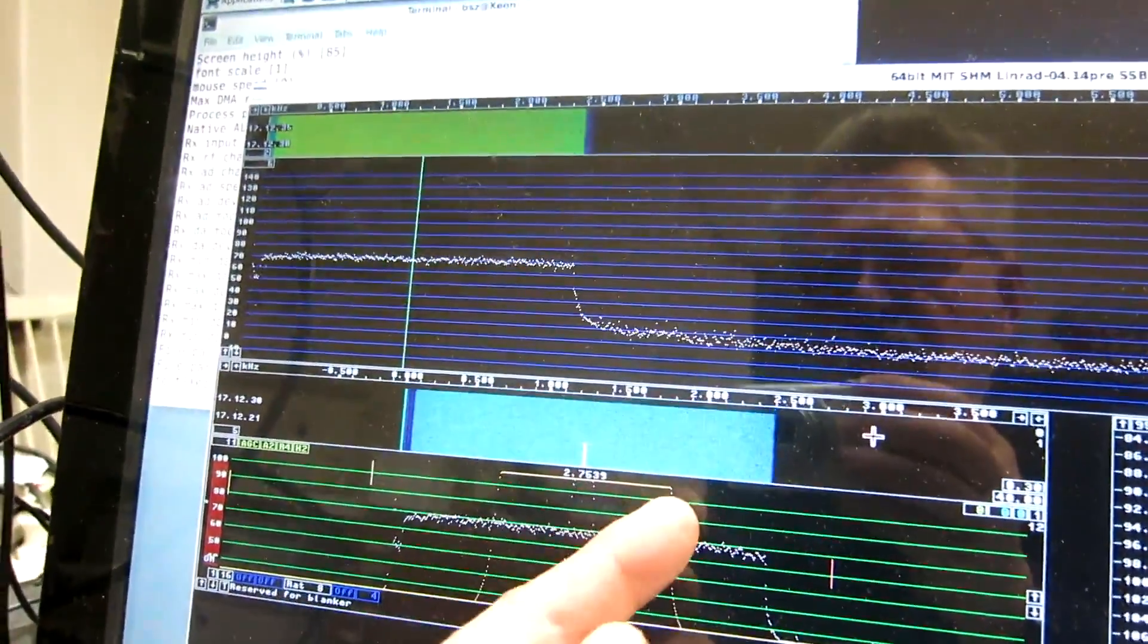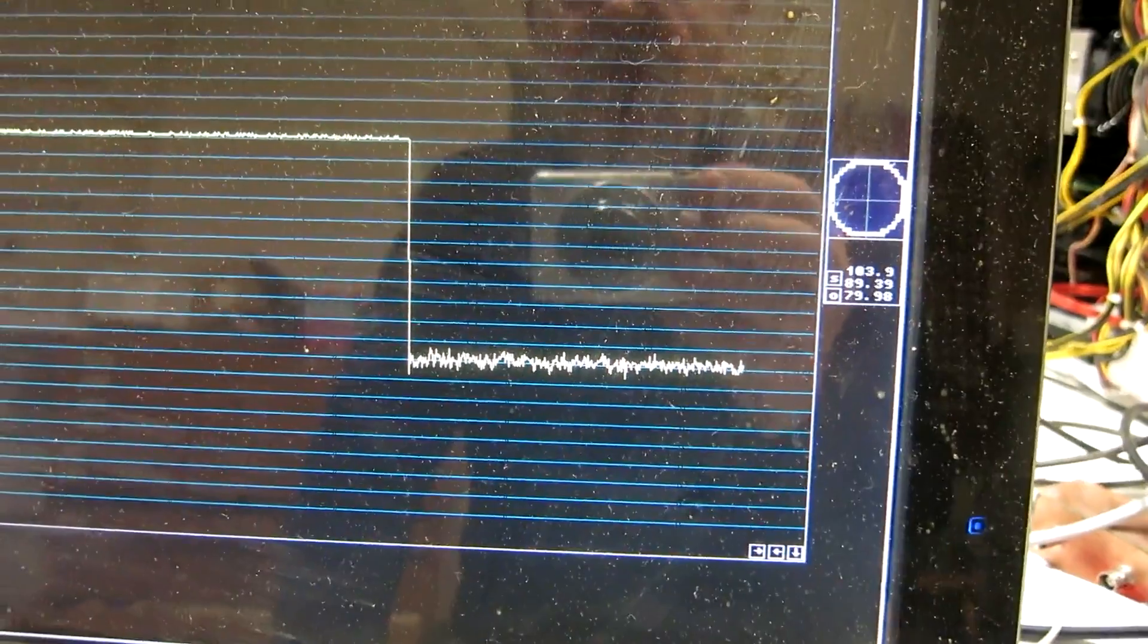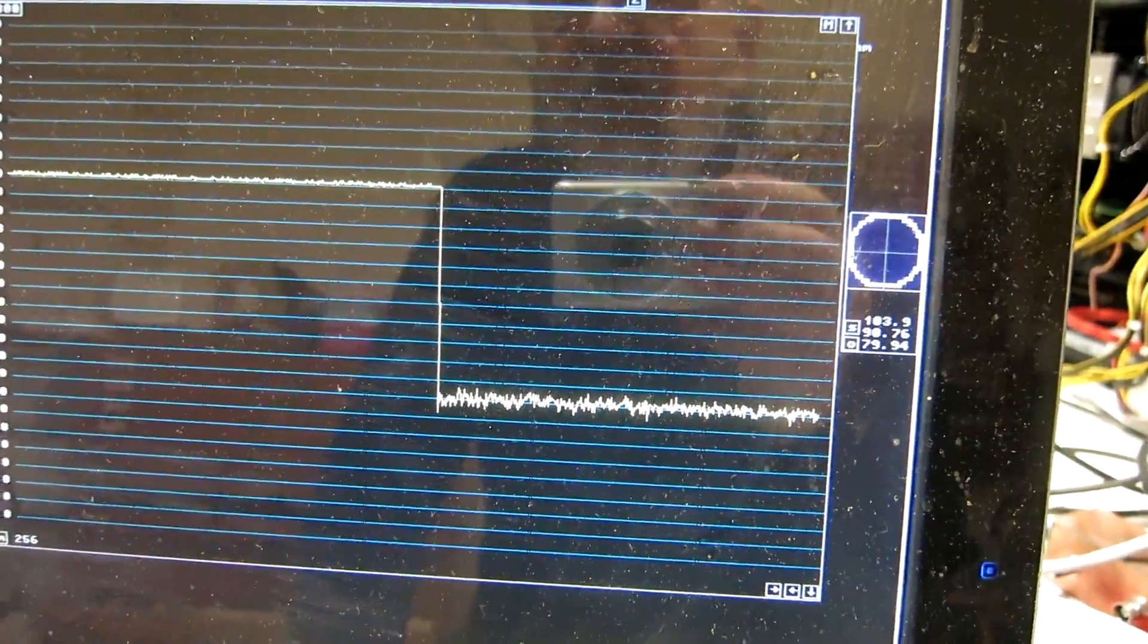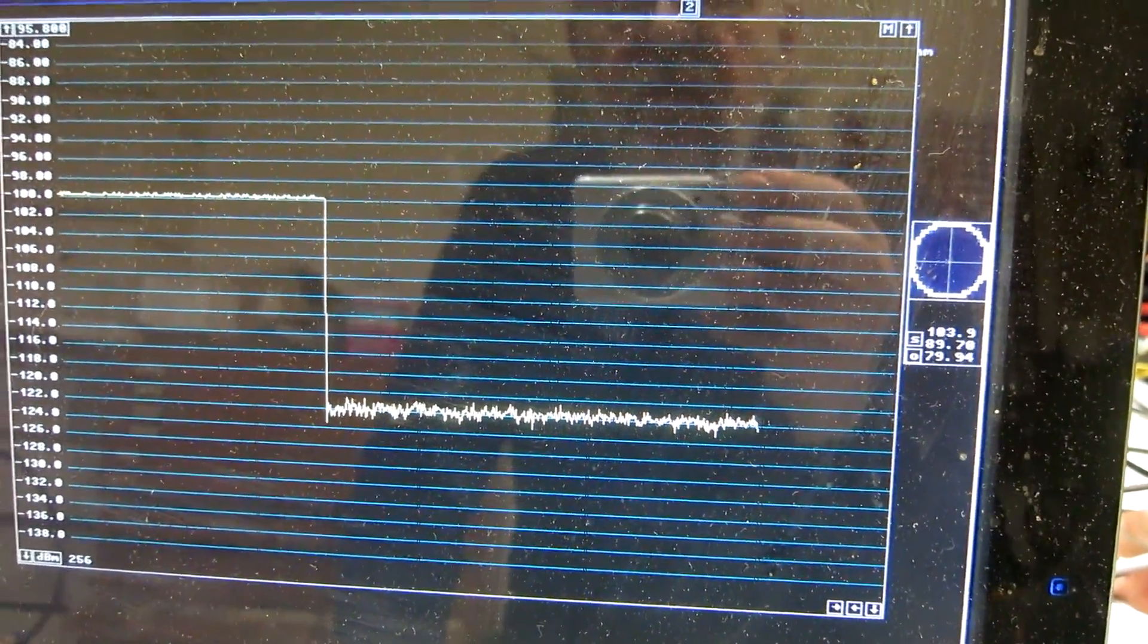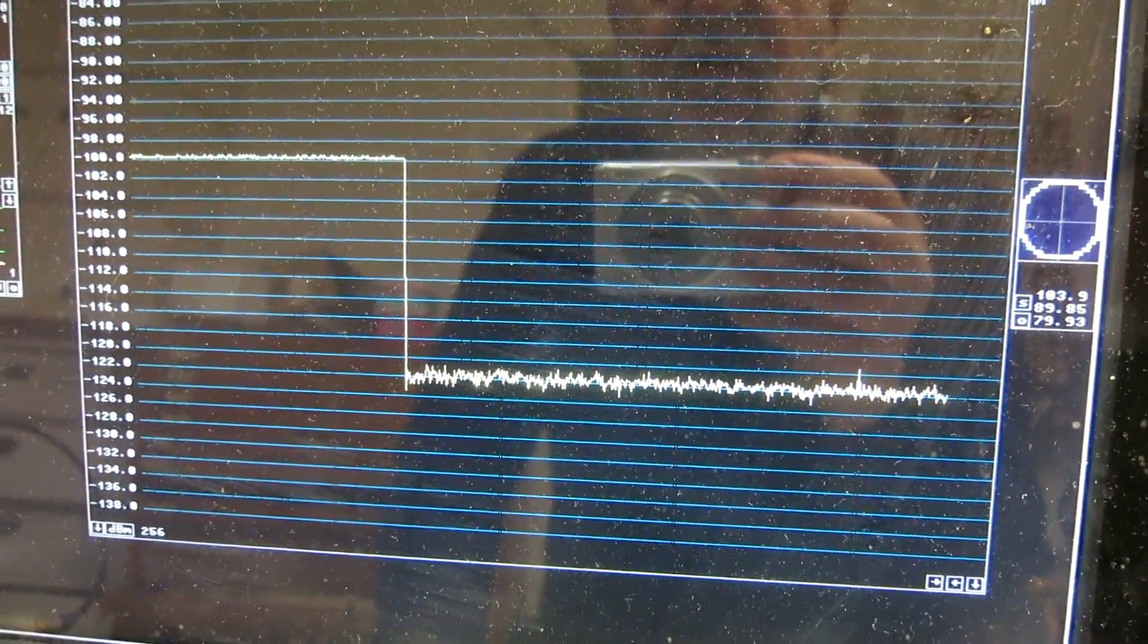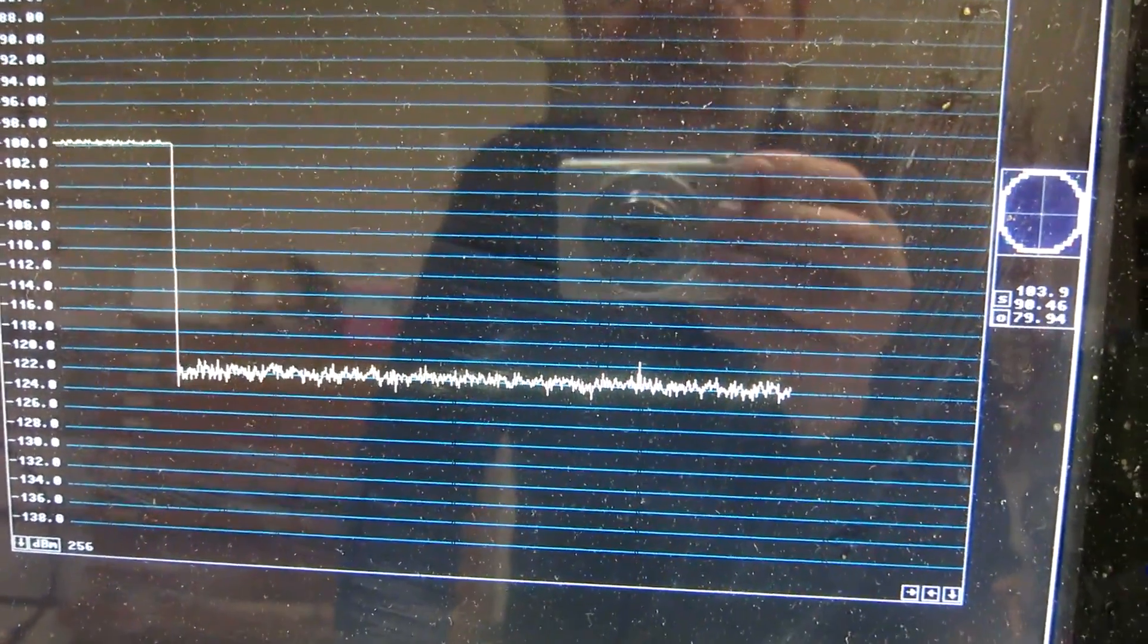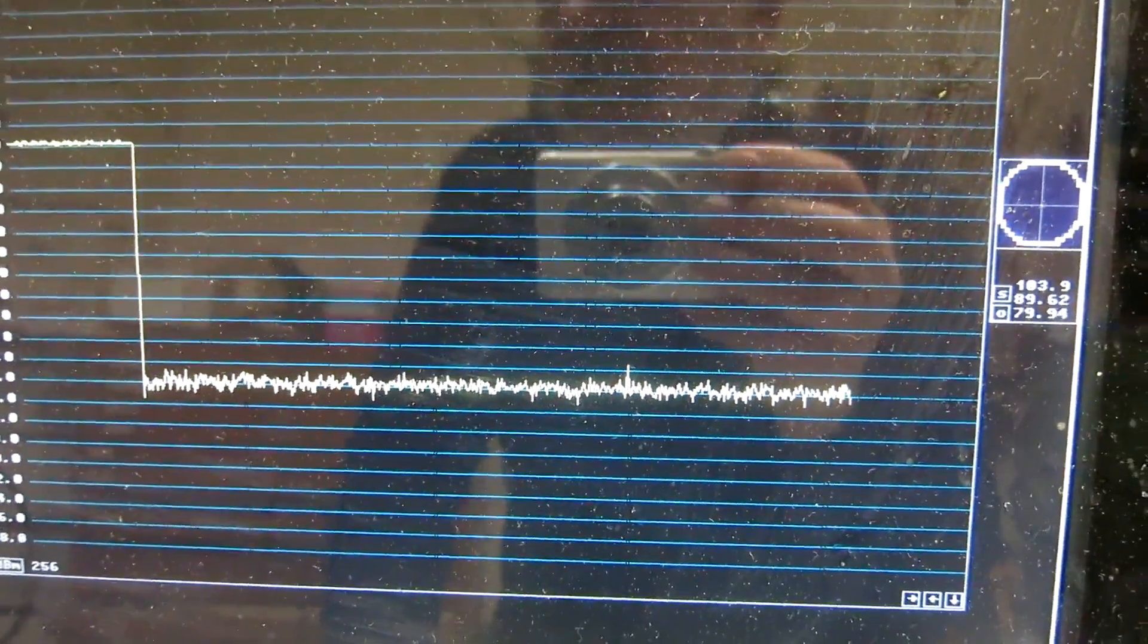The bandwidth is set to 1 kHz, the yellow here, and that means that the noise floor in 1 Hz bandwidth is minus 152. And down to the Boltzmann constant, which is minus 174, the distance is 22 dB, means the noise figure is 22 dB for the Perseus.